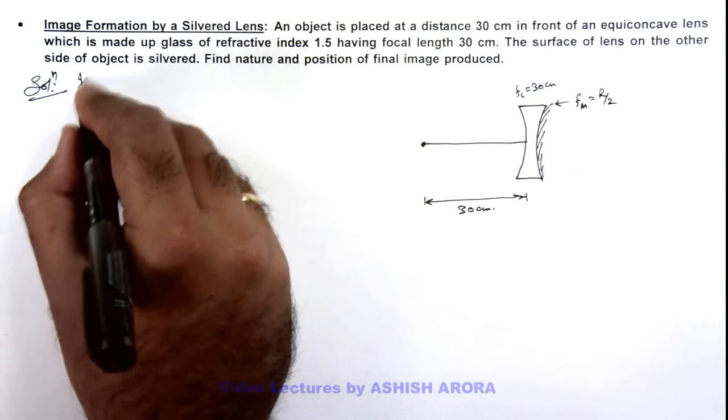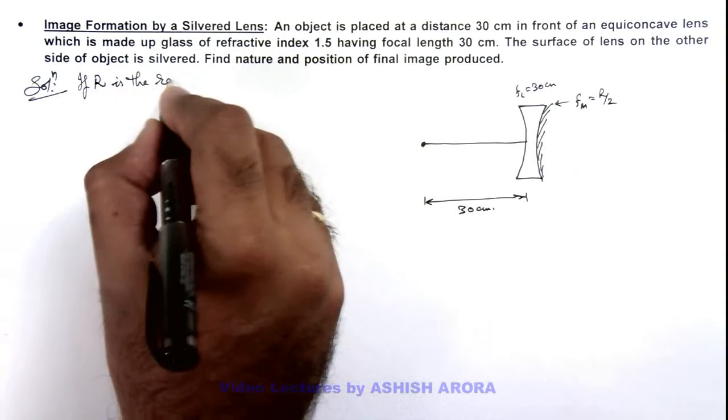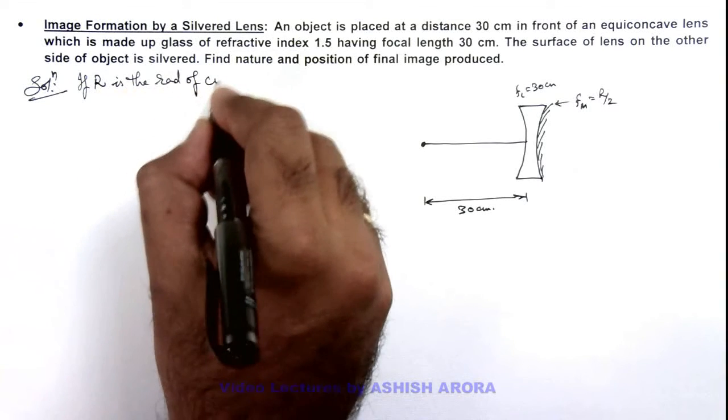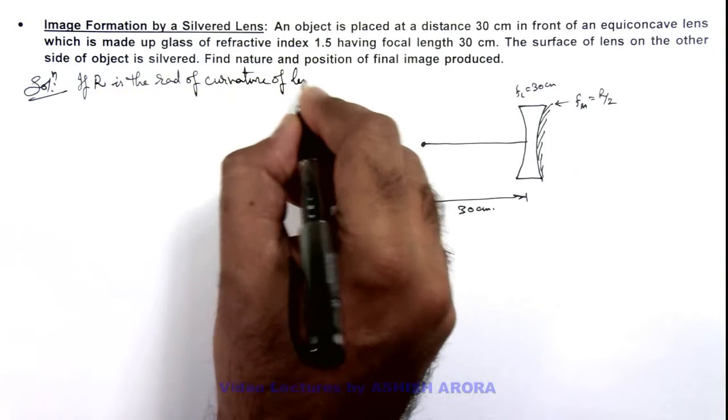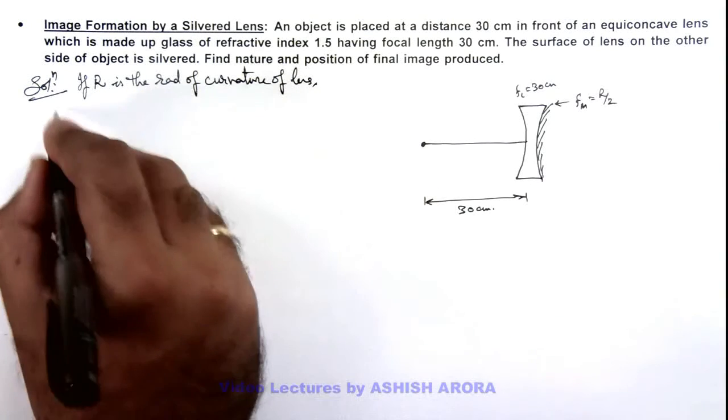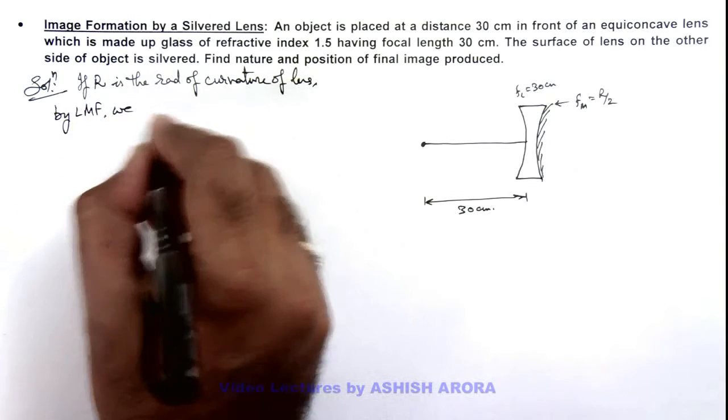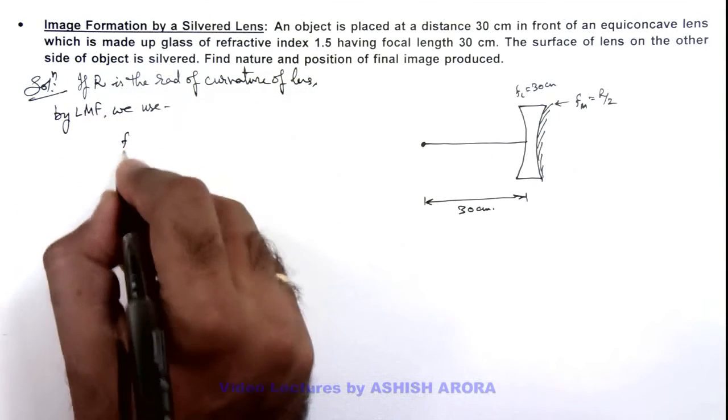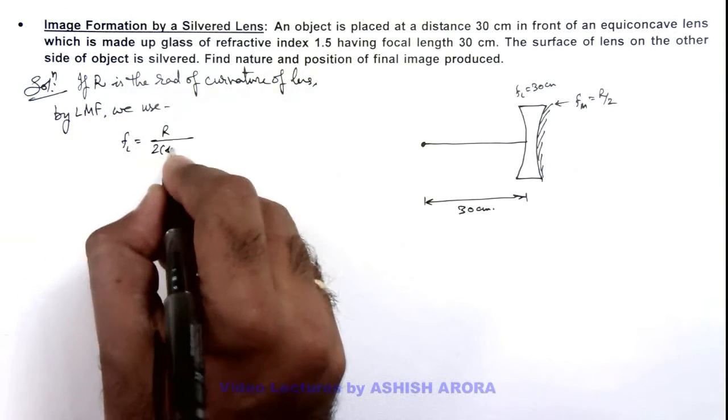Here we can write, if r is the radius of curvature of lens, then by lens maker's formula, we can write the value of focal length of lens is equal to r by twice of mu minus 1.